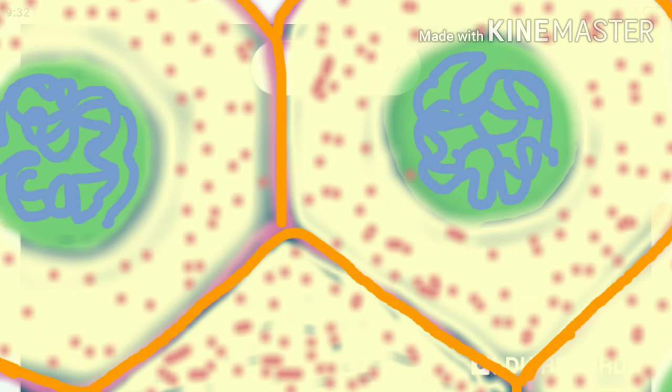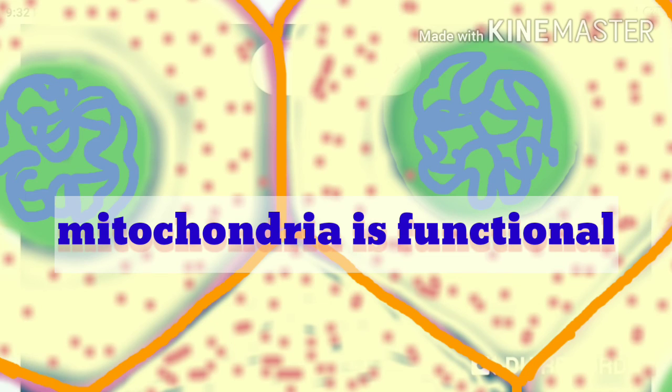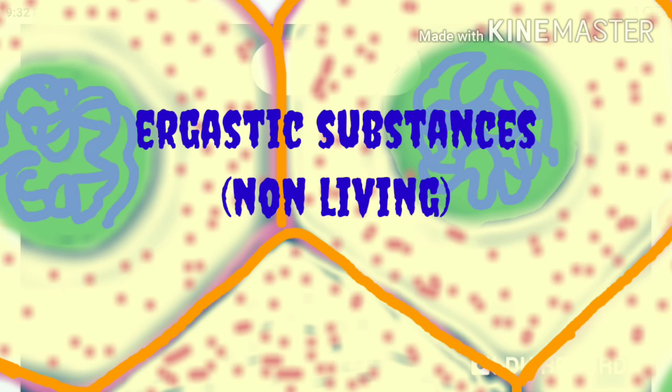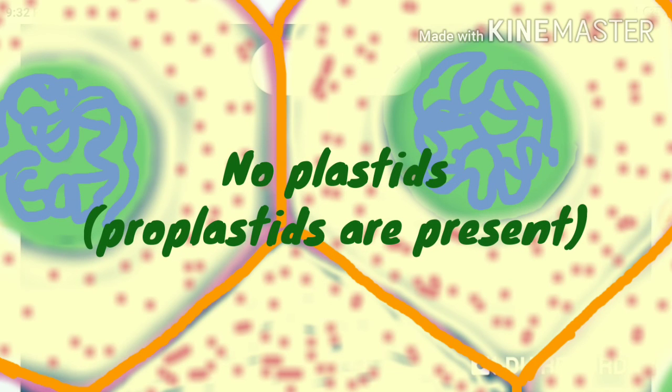Let's move on to the next character. Cell organelles are usually non-functional but mitochondria are functional. It's also an important point. Ergastic substances, they are non-living, are absent. Plastids are absent but immature protoplastids are present. It's very important. Plastids are absent but immature protoplastids are present in meristematic tissues.